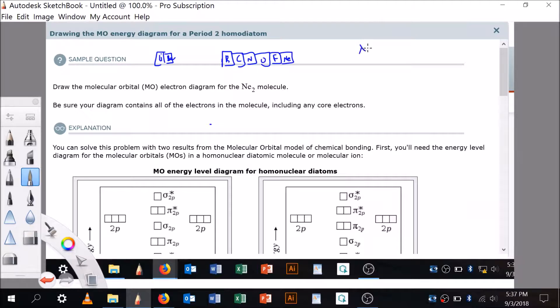We're doing an MO diagram for period 2 homodiatomic molecules. That means we've got whatever this atom is bonded to another one of itself - that's what homodiatomic means. So let's draw the molecular energy diagram.